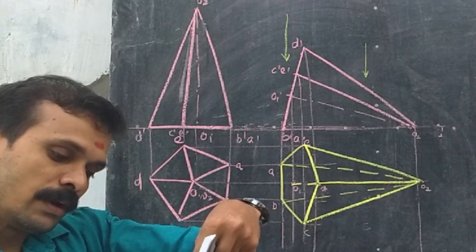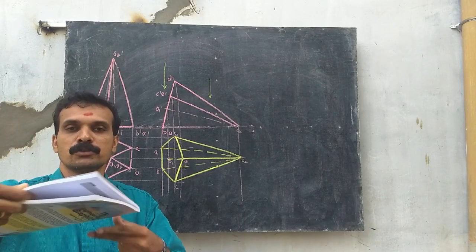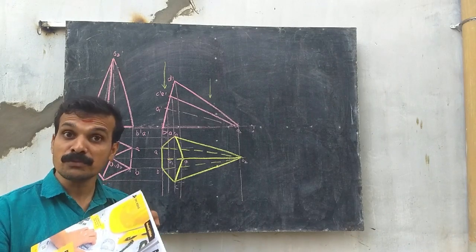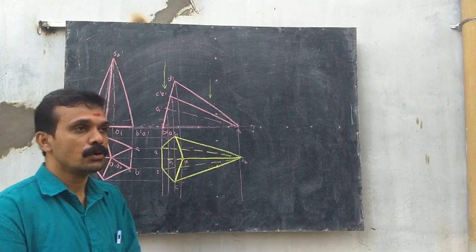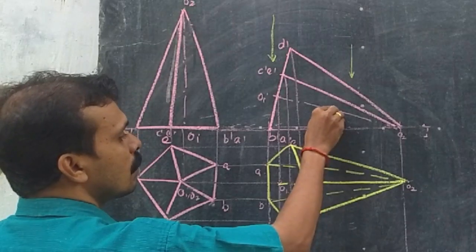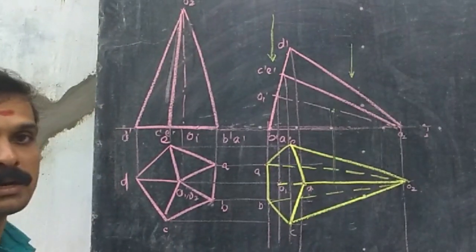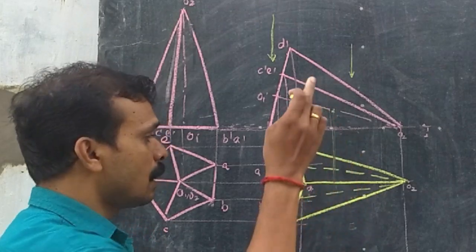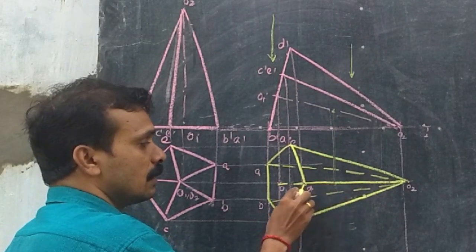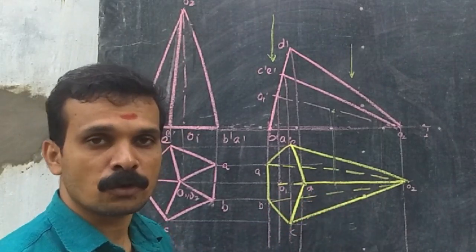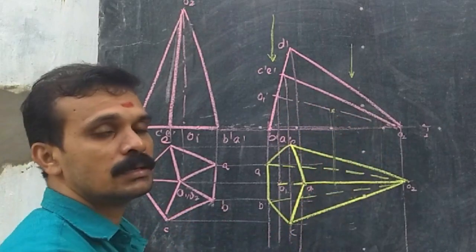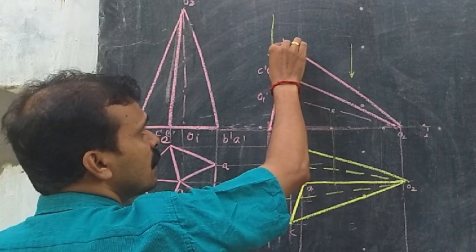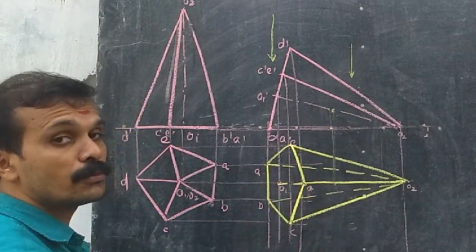The section plane is inclined at 45 degrees with HP, perpendicular to VP, and passing through the midpoint of the axis. So in the front view you can see the vertical trace. Transfer this intersection point to the front view. Since this point is the midpoint of the axis in the top view, it will also be the midpoint of the axis in the front view, and at that point we can cut the pyramid.